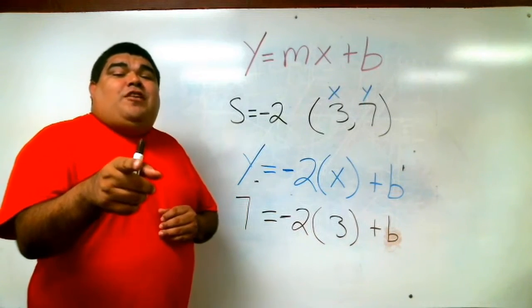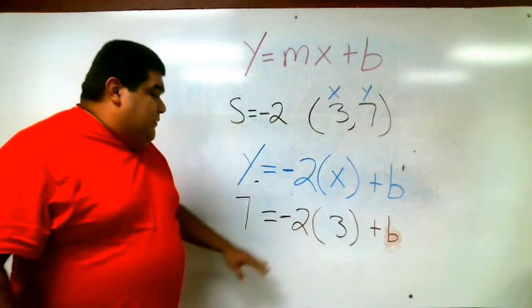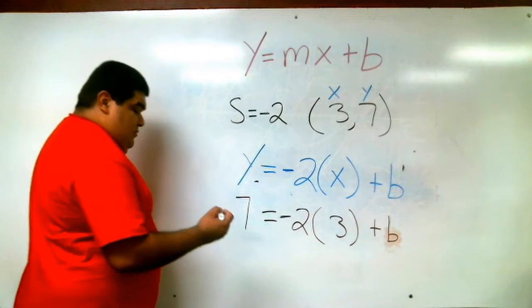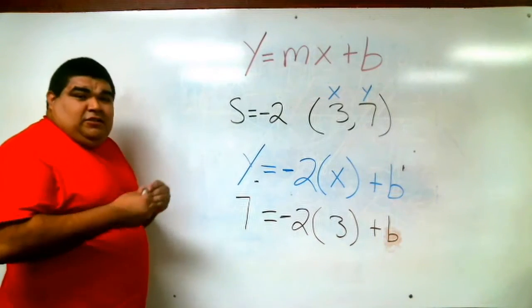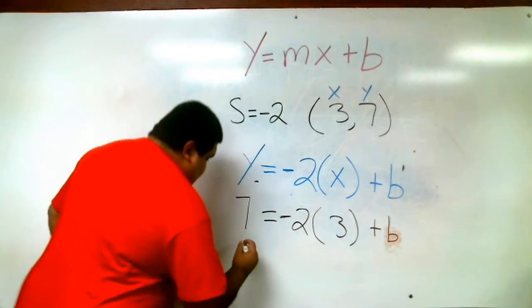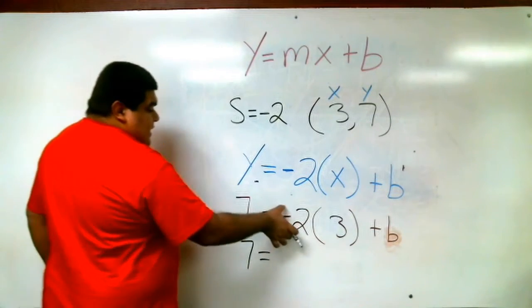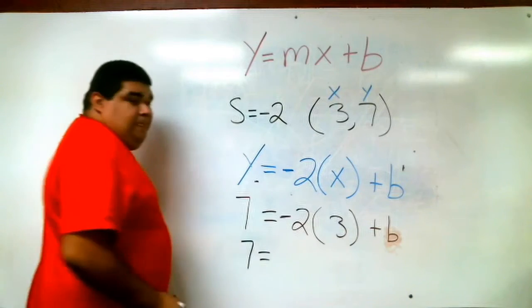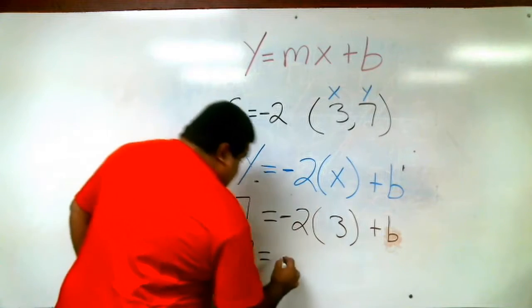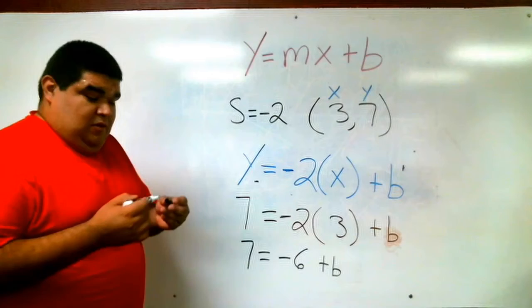So remember, what do we try to solve for? b, right? Good. Now that we have this part, we can actually start plugging it in. So we have 7. Let's move it down here. Now 7 equals negative 2 times 3. Negative 2 times 3 is negative 6. So negative 6 plus b, because remember, we still have that b there.